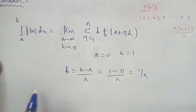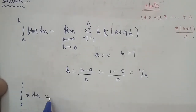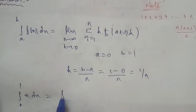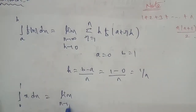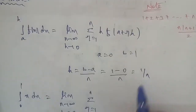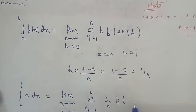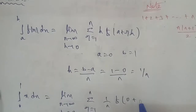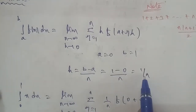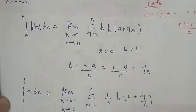So, integral 0 to 1, x dx. Applying the formula: limit n to infinity, h to 0, sigma r equal to 1 to n, h times f of a plus rh. The h value is 1 by n, and f of r — that term is 0 plus r times 1 by n, so r by n.